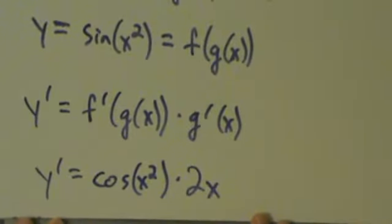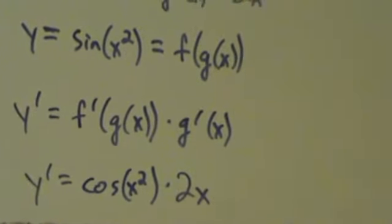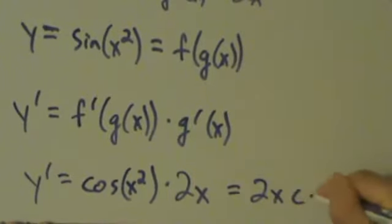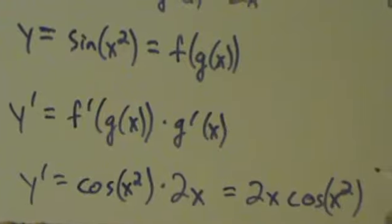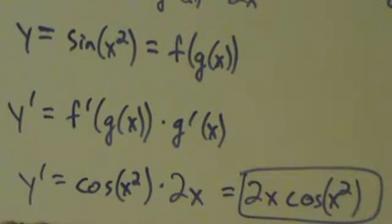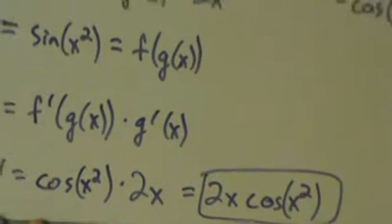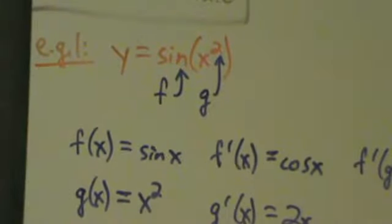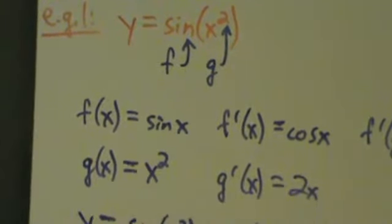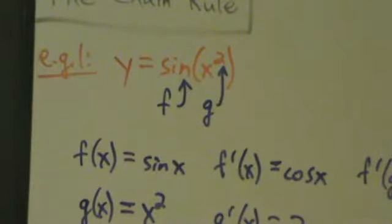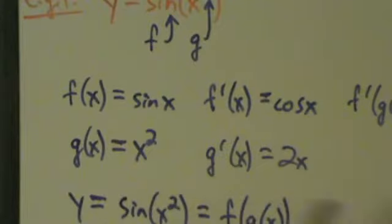That's pretty much the answer. When you have an algebraic thing times a trig thing, it's customary to write the algebraic factor first, but it doesn't really matter. So if y is the sine of x squared, then y prime is equal to 2x times the cosine of x squared. That's one way of interpreting the chain rule. For more complicated functions it's harder to identify f and g — you might have functions inside of functions inside of functions — so this process becomes more difficult.